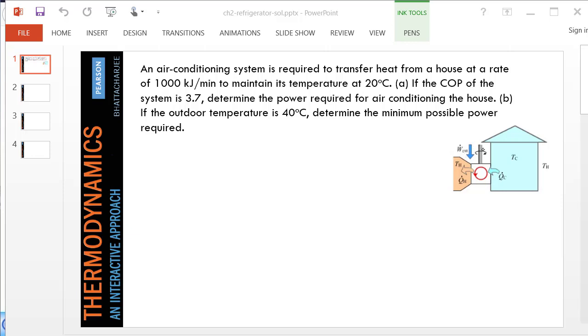The cycle essentially sits outside the house, removing heat at a rate of 1000 kJ per minute. The inside temperature is Tc, the cold space temperature, and the outside temperature is given to us, which is 40 degrees Celsius.